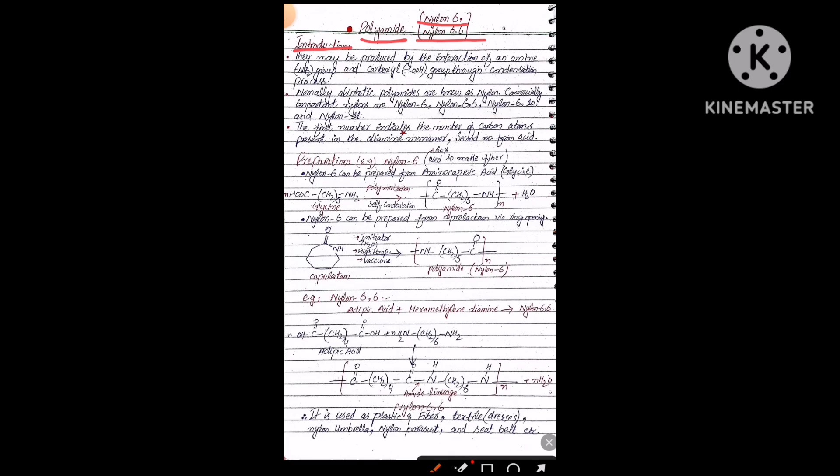Polyamide may be produced by the interaction of amine NH2 group and carboxyl group through condensation process. Students, what is condensation process? A process in which release of small molecules takes place. Two interactions take place: one interaction by amine from one unit, another interaction by carboxyl from another unit. When both monomeric units come in contact, a condensation process takes place and they will polymerize to form a polymer.